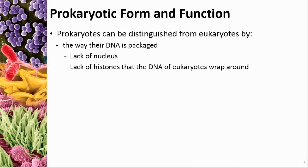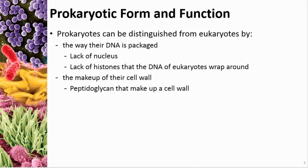Another thing about DNA specifically is that in a prokaryote, there are no histones. In a eukaryote, histones are proteins that the DNA is wrapped around — prokaryotes don't have them. The cell wall is also different because prokaryotes have a cell wall made of peptidoglycan, which is a protein-sugar molecule. In eukaryotes, if they have a cell wall — which many don't — it's made of cellulose, like in a plant.